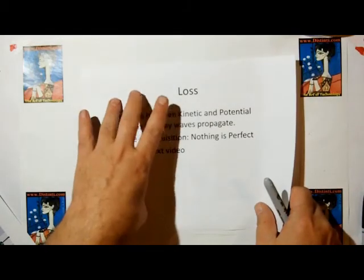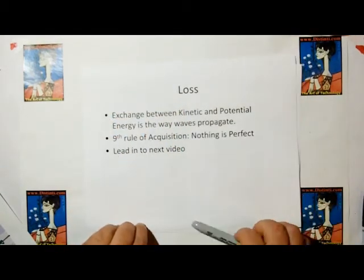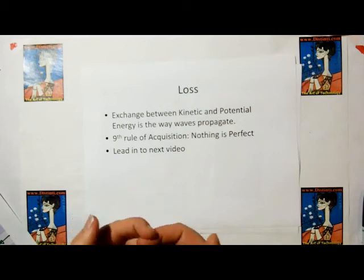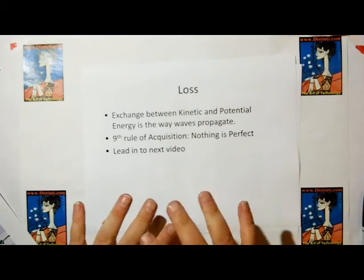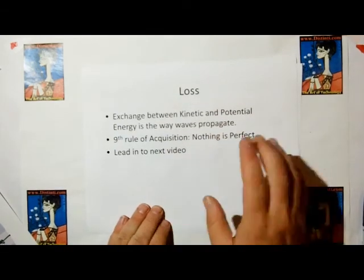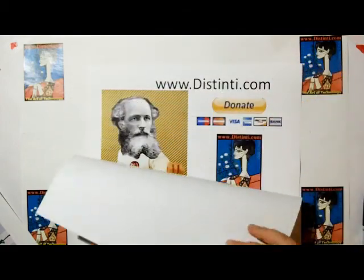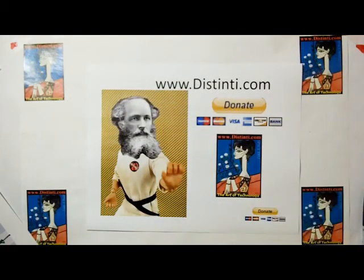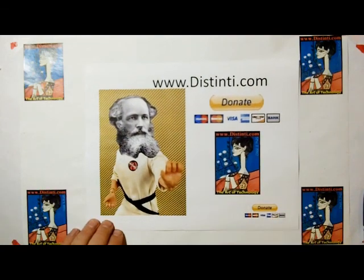So that's my lead into the next video. We're going to discuss loss. Now that we realize that there must be an ether, we can start using the other anomalies and paradoxes to help us uncover properties of the ether. And loss is going to be one of those properties that we're going to discuss in the next video. Again, please donate. My printer's having problems, and it would be nice to get it fixed. Luckily, this set came out good. Thank you very much.